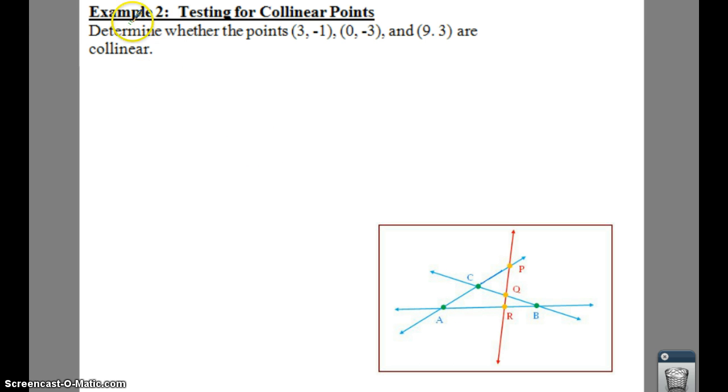All right, so what we're going to do is we're going to find the determinant of our matrix. We have three, negative one, zero, negative three, nine, and three. There's a nice little comma there, you just can't see very well. All right, so we got some ones here.